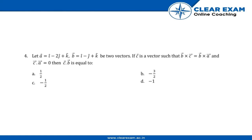We have the question: given vector a = i cap minus 2 j cap plus k cap, and vector b = i cap minus j cap plus k cap. If c is a vector such that b cross c equals b cross a, and c dot a equals zero, then we have to find c dot b.